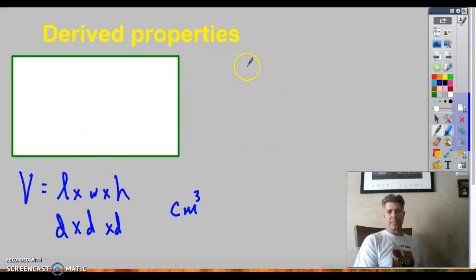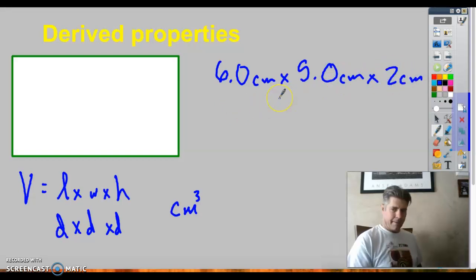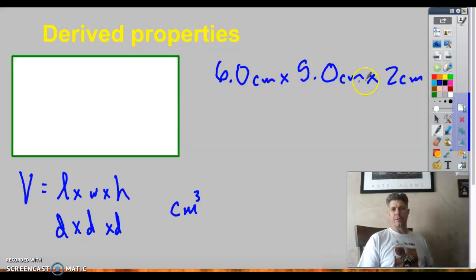I'll say this box was 6.0 centimeters by 5.0 centimeters by 2.0 centimeters. When I multiply these all out, 6 times 5 would be 30, times 2 would be 60 centimeters cubed.